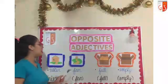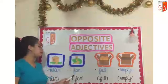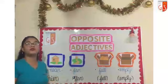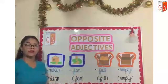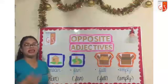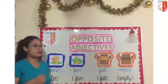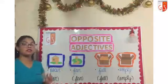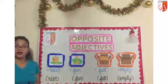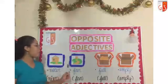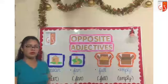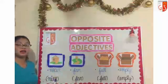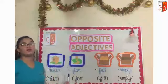¿Y cómo se dirá lejos? Lejos en inglés se dice far. Come on, repeat after me — repitan después de mí: lejos, far. Y cerca, near. Y lejos, far. One more time: cerca, near. Lejos, far.